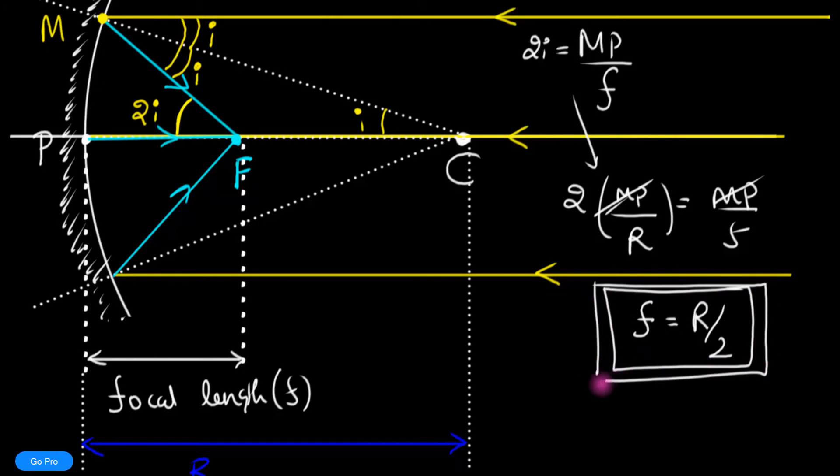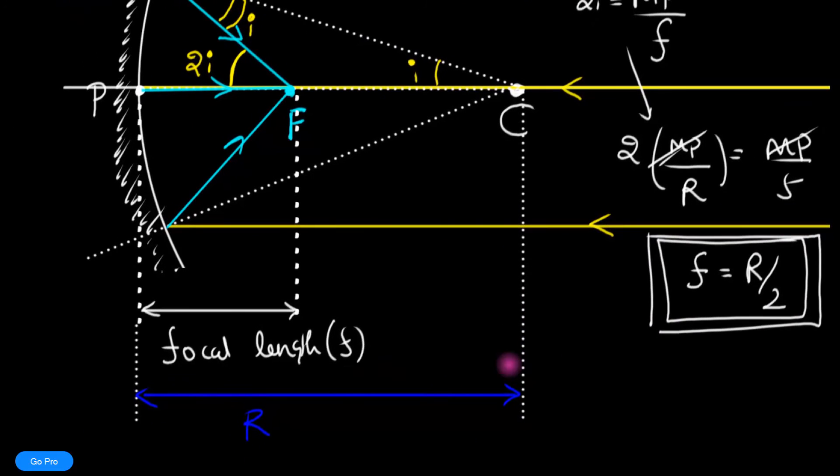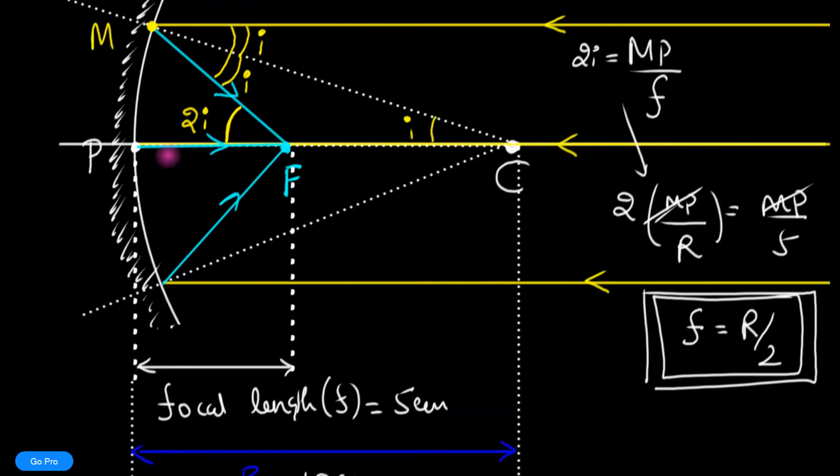For example, if the radius of curvature is 10 centimeters, this tells us the focal length must be at 5 centimeters. I think that's quite intuitive over here, because the focal length is making the same arc length compared to the radius. However, look at the angle—the angle is twice.